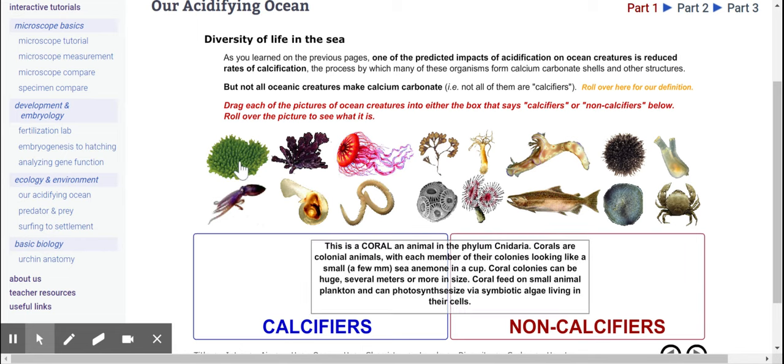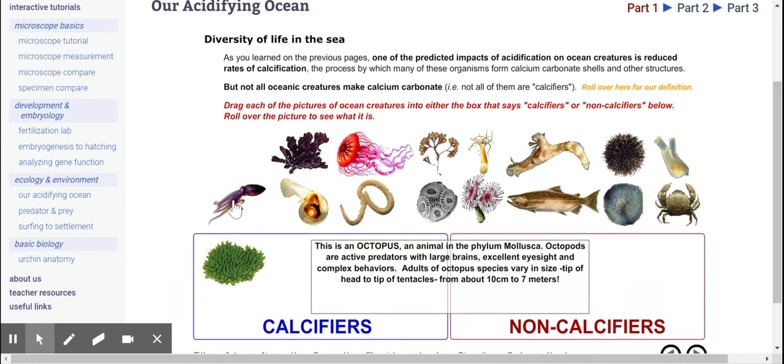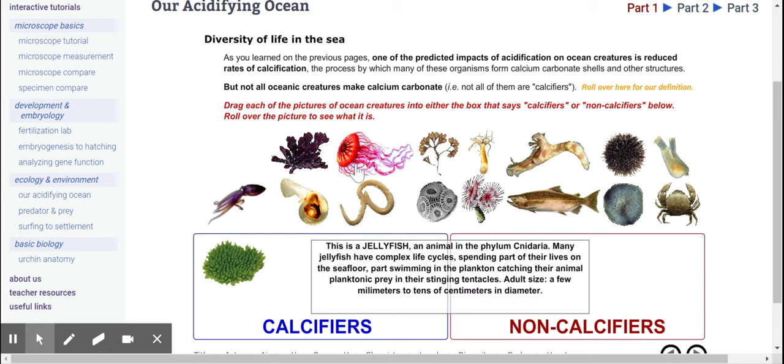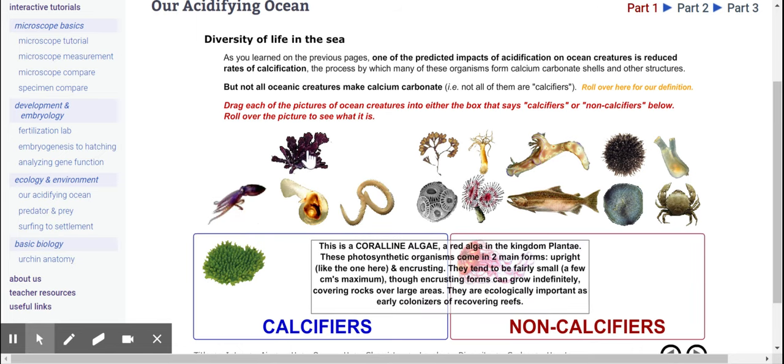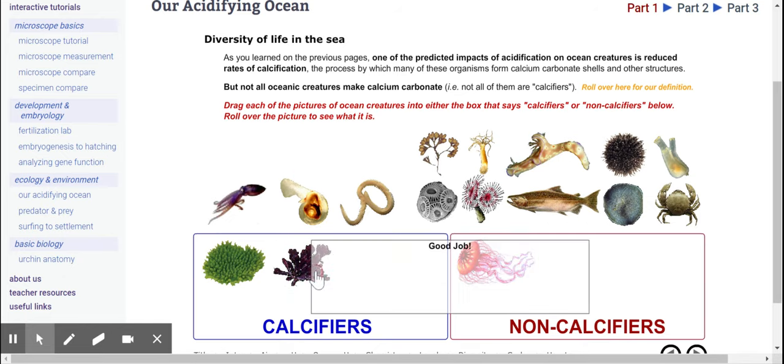First is coral, that is a calcifier. Jellyfish, the jellyfish, non-calcifier. Coraline algae, calcifier.